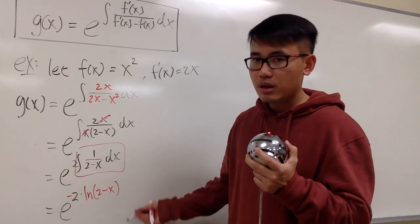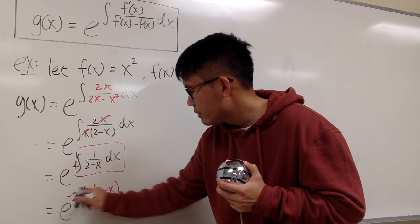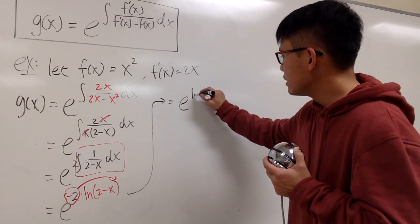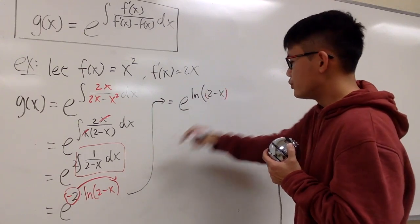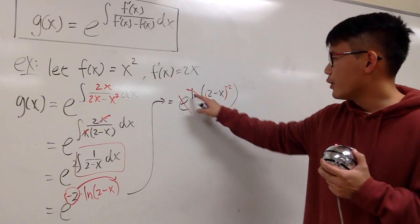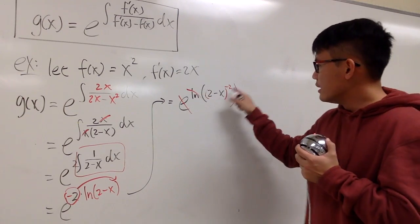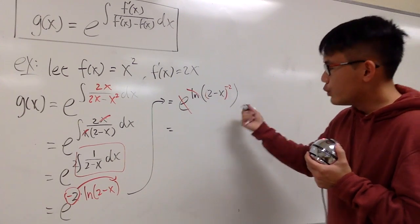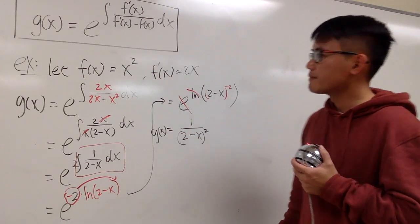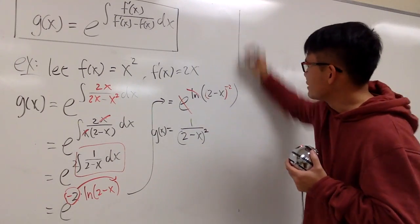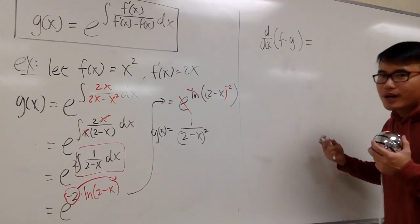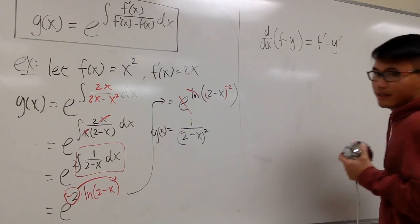We bring the 2 up as a power: e to the ln of (2 minus x) raised to the negative 2 power. The e and ln cancel — since the coefficient is exactly 1 — leaving us with (2 minus x) to the negative 2, which is 1 over (2 minus x) squared. So g(x) = 1 over (2 minus x) squared. Now let's verify — if we use the fake product rule on f times g, we just multiply f prime times g prime.